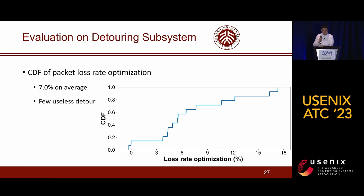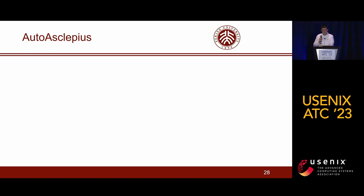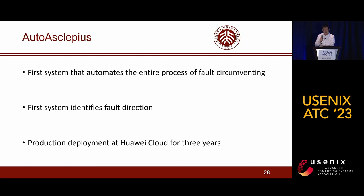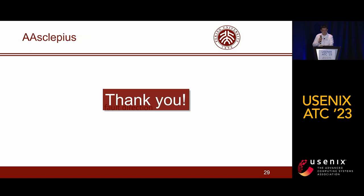This is possibly because the middle fault had already disappeared when the traffic detour was executed. In conclusion, AutoArcical Appeals is the first system that automates the entire process of fault circumvention linking, as well as the first system identifying fault direction. It has been in production deployment at Huawei Cloud for three years and protects Huawei Cloud from major accidents in 2022.